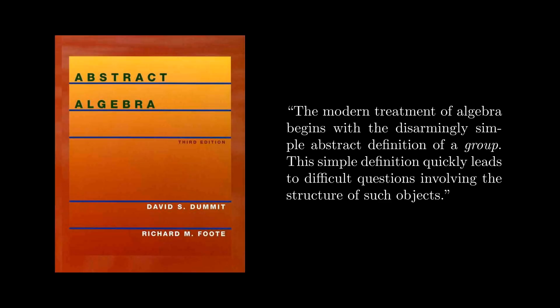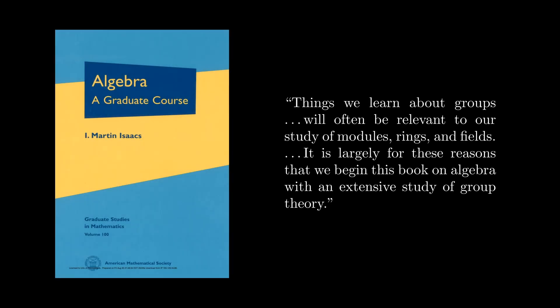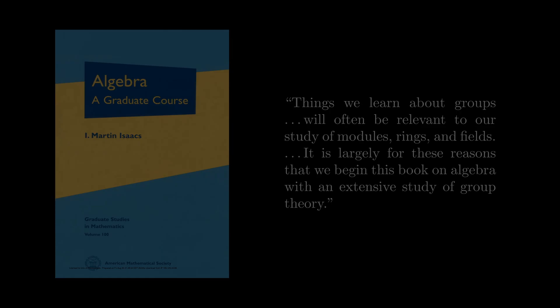In almost any introductory course in abstract algebra, the group is the very first mathematical object of study, and this is for good reason. Groups are absolutely fundamental to mathematics and to nature. They have a simple definition, yet give rise to a theory which is incredibly rich and complex. They're a perfect example of how mathematical objects can carry hidden structure and how abstraction can help us clarify ideas. In this video, I hope to convince you of all of this.